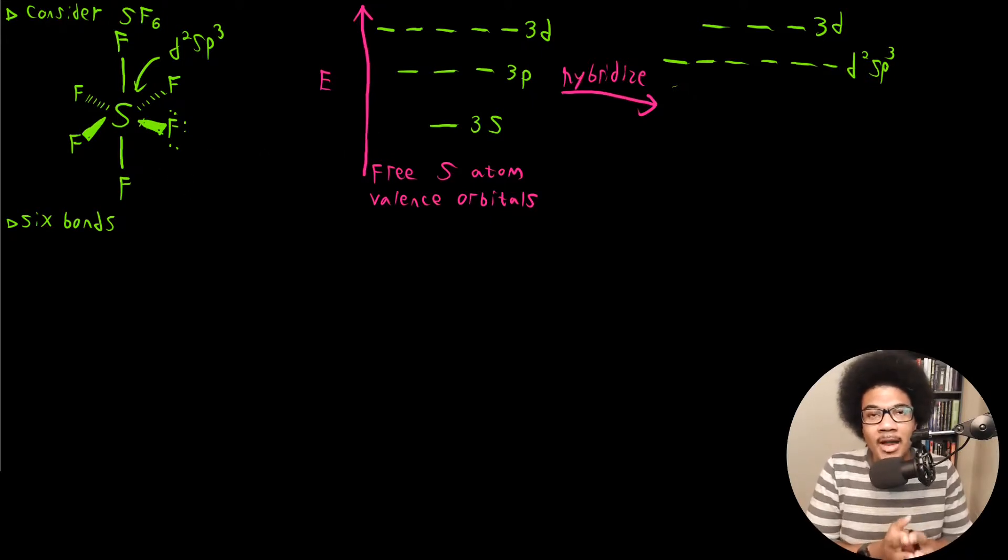So those are all of the hybridization schemes that you'll be responsible for. And that kind of really ends our discussion on orbital hybridization. Like I said, just keep in mind that you really can determine this hybridization scheme that's going to be employed by how many electron groups are around a particular atom. So that's really similar to our steric number. So you can kind of use the general rule of the steric number in order to figure out what the hybridization scheme is going to be.